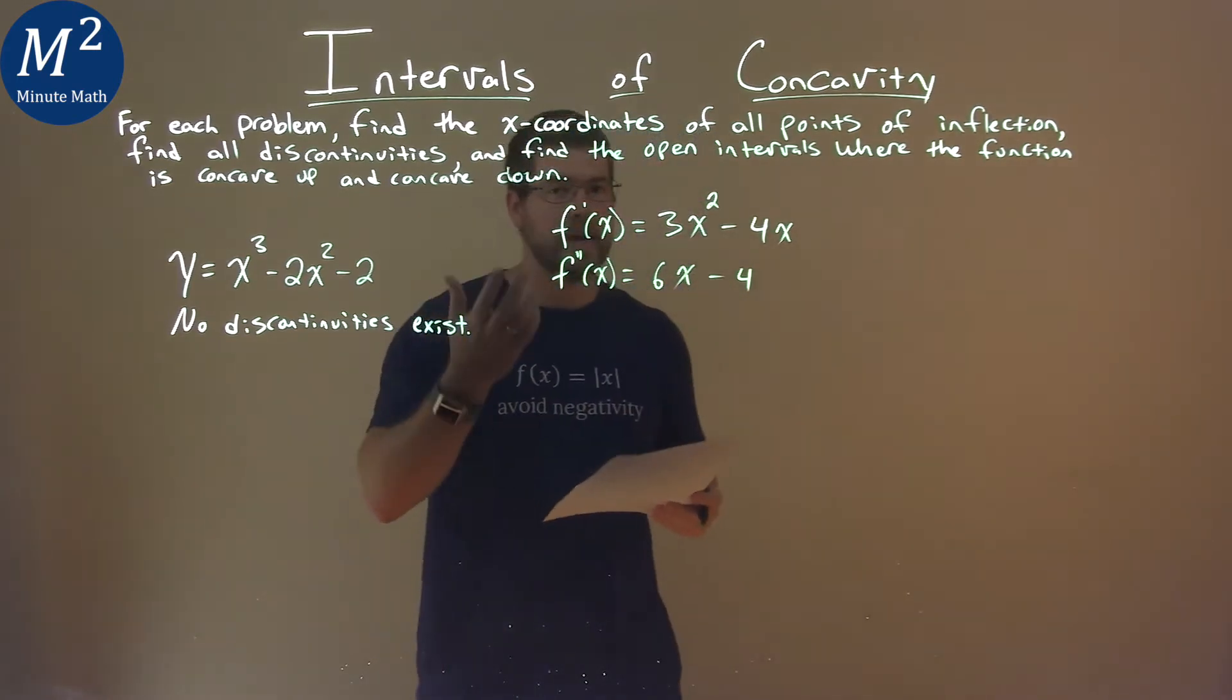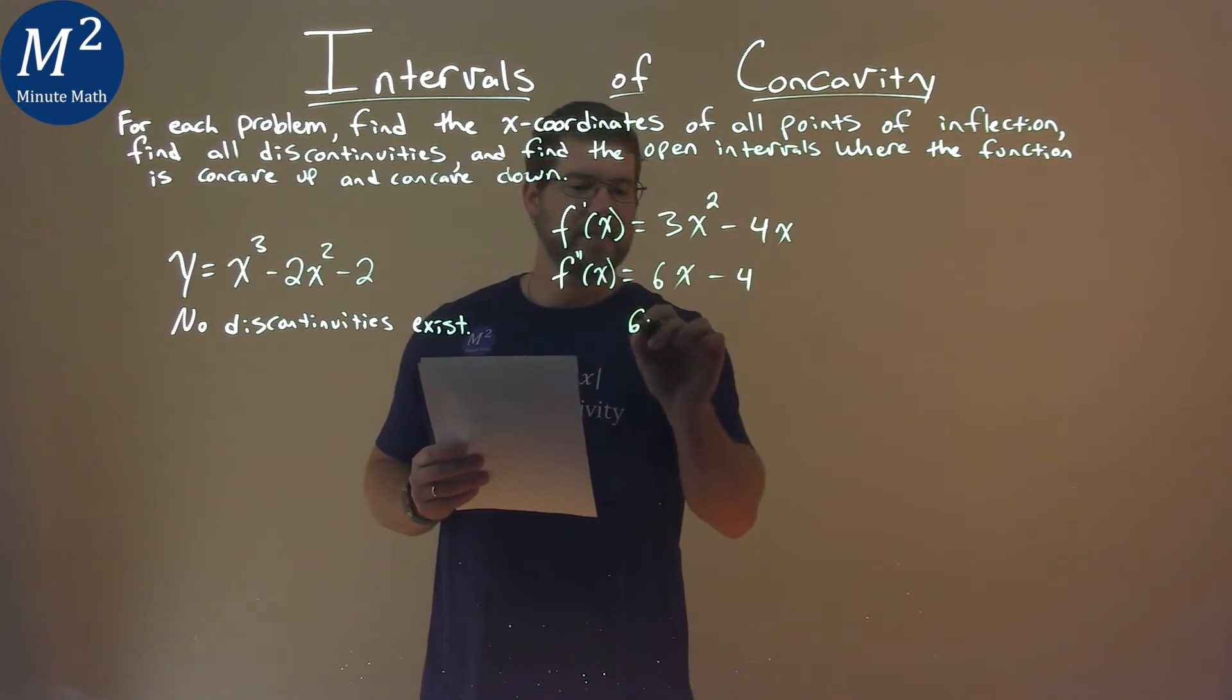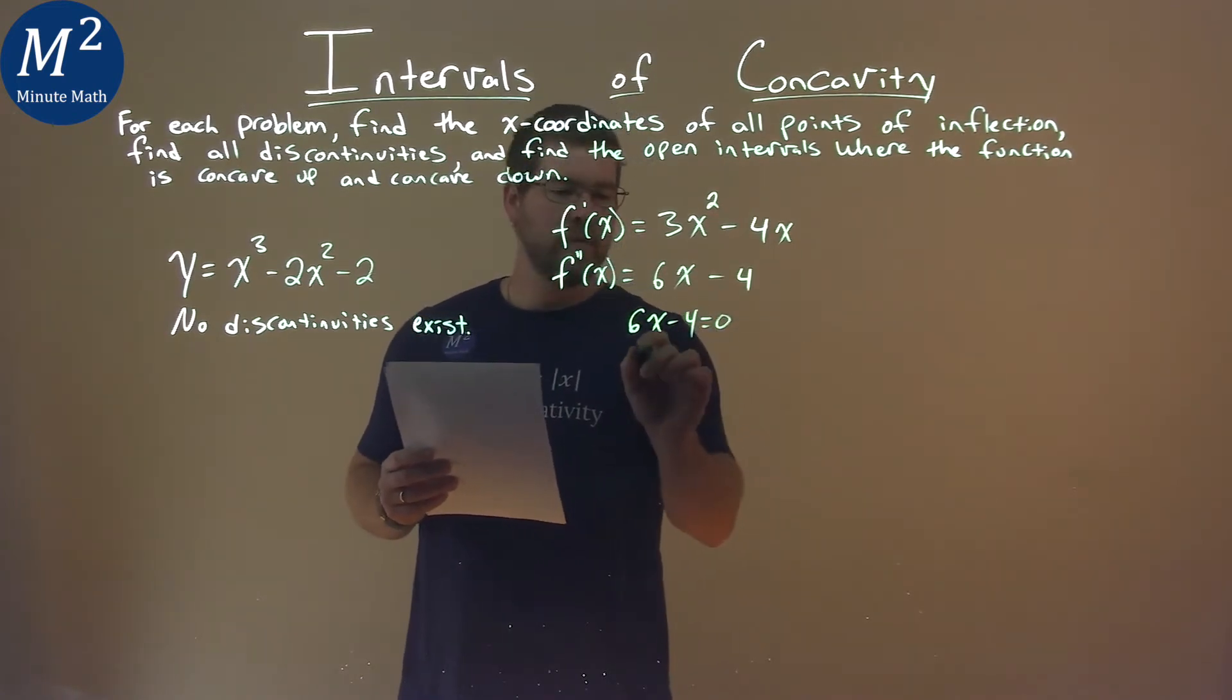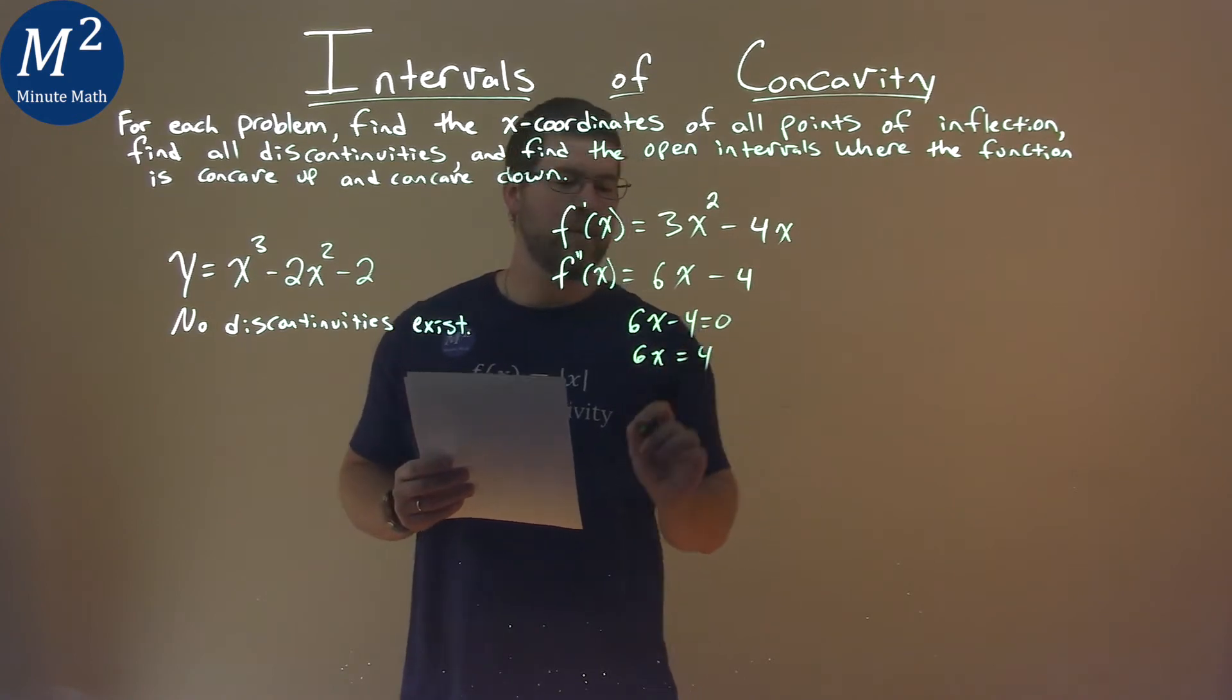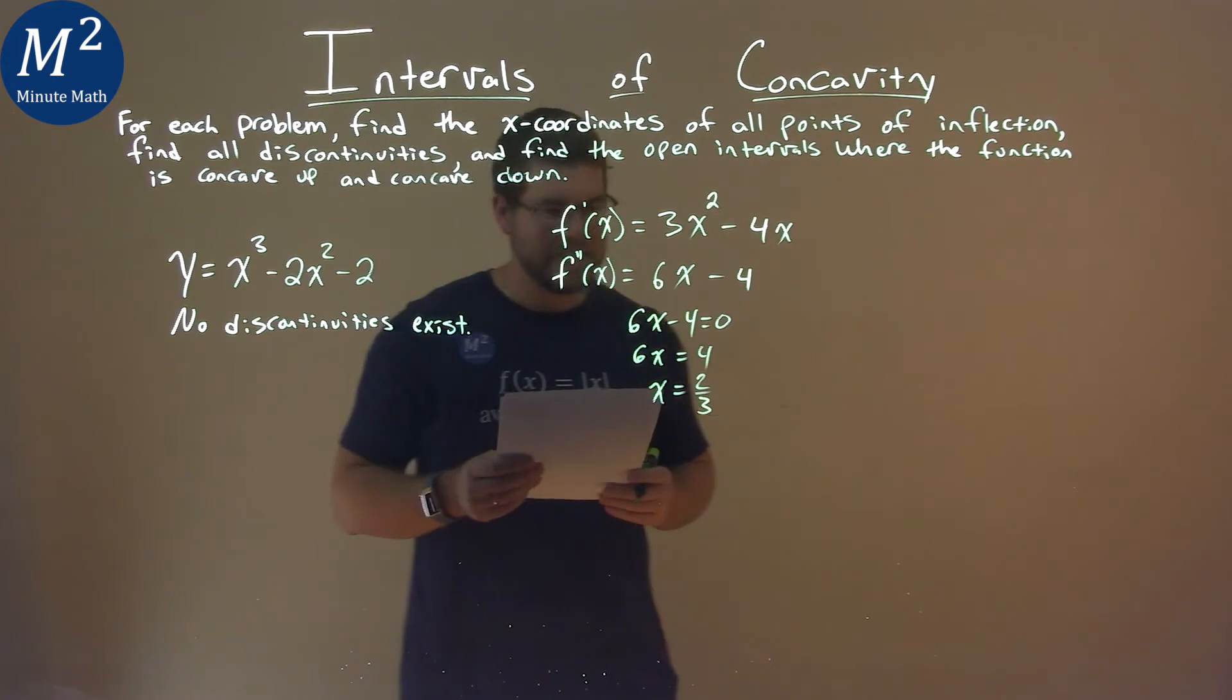I now take my second derivative and set it equal to 0. We have 6x - 4 = 0. Add 4 to both sides: 6x = 4. Divide both sides by 6, and x = 2/3 when we simplify.